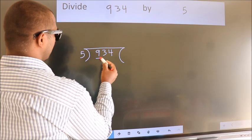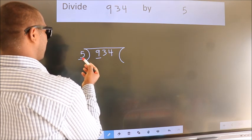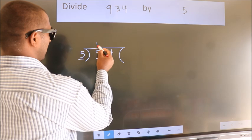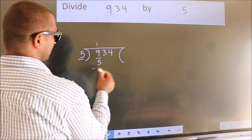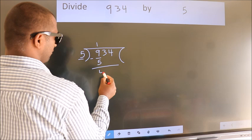Here we have 9. Here 5. A number close to 9 in the 5 table is 5 times 1 is 5. Now we should subtract. We get 4.